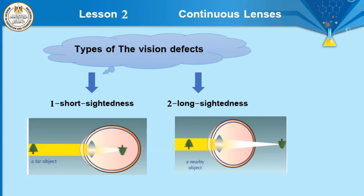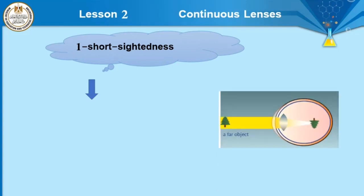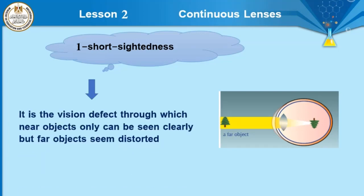That is the meaning of short sightedness. In long sightedness, the near object will form an image behind the retina of the eye. This means the person suffering from long sightedness can see far objects clearly, while near objects appear distorted. In short sightedness, the far object forms an image before the retina, so near objects only can be seen clearly, but far objects seem distorted.